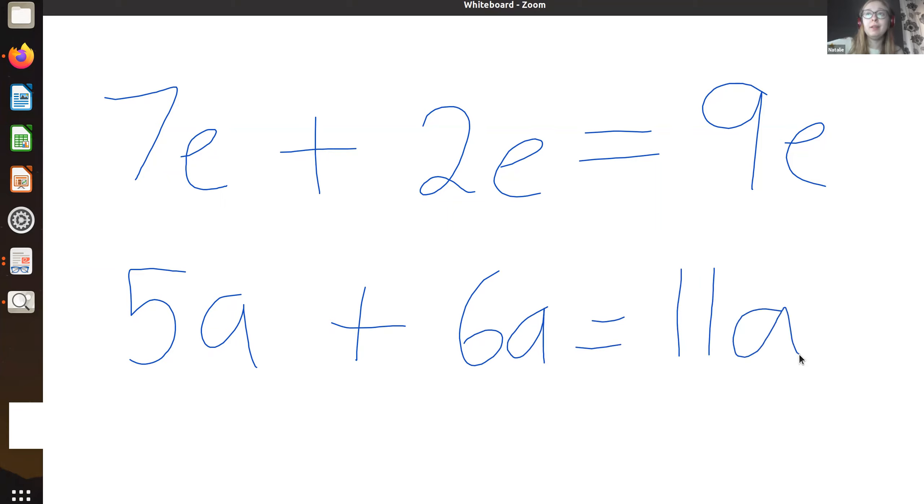So in algebra, let's say I have 7e and I want to add 2e. Now I imagine that the letter stands for something like eggs. If I had 7 eggs and I added an extra 2 eggs, then I'd have 9 eggs. If I had 5 apples and I added 6 apples, I'd have 11 apples.